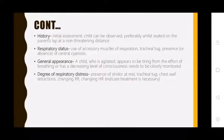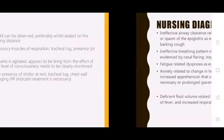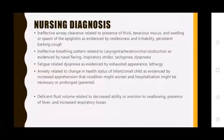Inhalation assessment should be observed, preferably while the parent is nearby at a non-threatening distance. Respiratory status indicators include use of accessory muscles of respiration, tracheal tug, presence of cyanosis, and a child who appears agitated. Decreasing level of consciousness and increasing effort of breathing should be closely monitored.